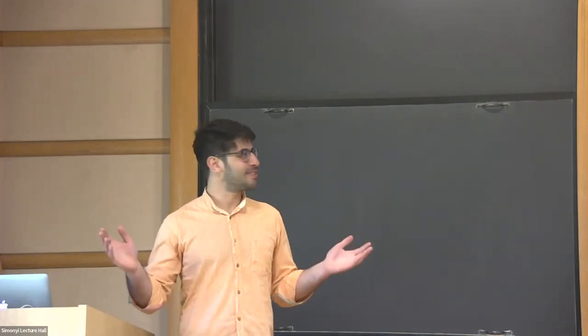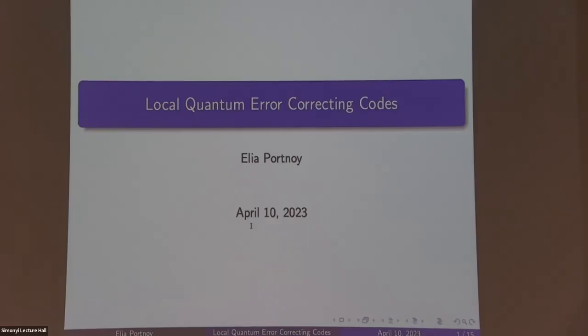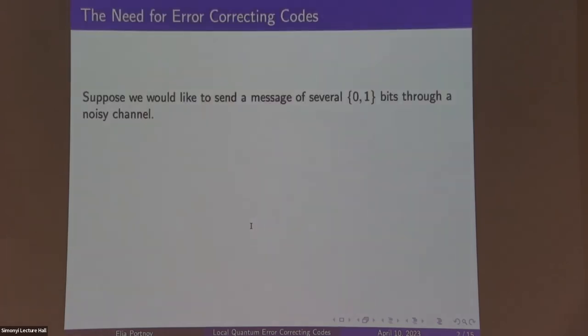Thanks for having me. I'm excited to share something I've been thinking about recently. The group is not huge so please ask questions along the way. I'm going to talk about something called local quantum error correcting codes. The main goal is to explain what that is, and then explain why it's very useful to think about this geometrically. I'll present a result that combines error correcting codes and geometry. To motivate the quantum stuff, we'll start with a problem from classical error correction.